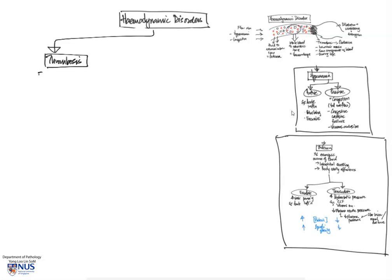Hello. In the previous mind map, we looked at hyperemia and edema. And now we're going to look at thrombosis, hemorrhage, and shock.